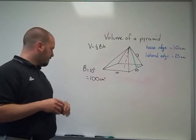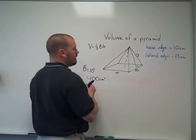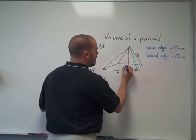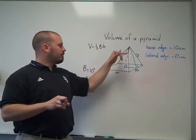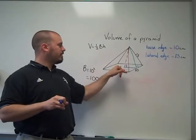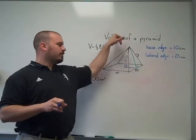Now having the slant height drawn in is actually somewhat convenient because in order to find the height, one way that I can do that is to use the right triangle that exists with this red segment, blue segment, and green segment.